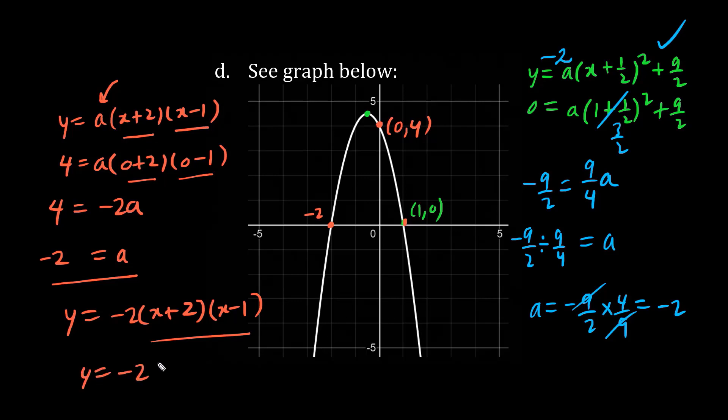We have y equals minus 2. We have x squared. Minus x plus 2x is plus x. We have 2 times negative 1 is minus 2. And so we have the equation y equals minus 2x squared, using distribution, minus 2x plus 4.